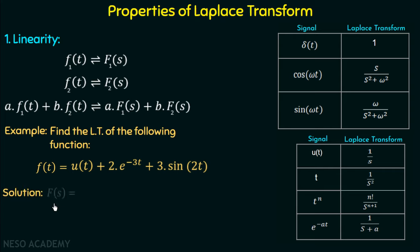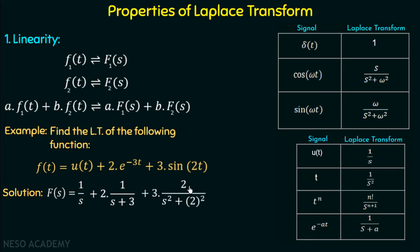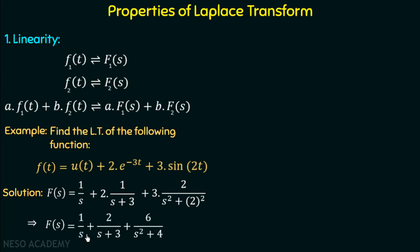Moving on to the solution: F(s) = 1/s + 2·[1/(s+3)] + 3·[2/(s²+4)]. The Laplace transform of e^{-3t} is 1/(s+3) because a is replaced with 3, multiplied by 2 gives 2/(s+3). The Laplace transform of sin(2t) is 2/(s²+4), multiplied by 3 gives 6/(s²+4). Rearranging, F(s) = 1/s + 2/(s+3) + 6/(s²+4). This is the Laplace transform of f(t), calculated using the linearity property.